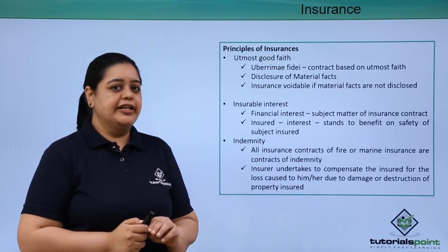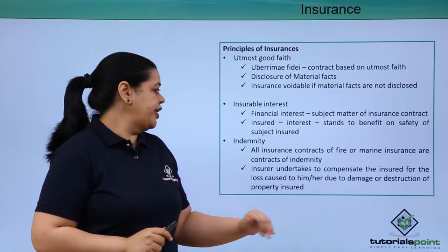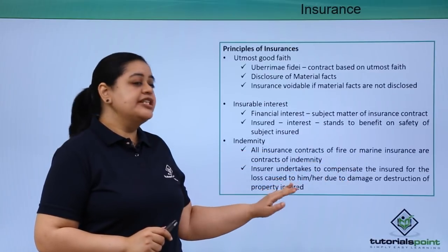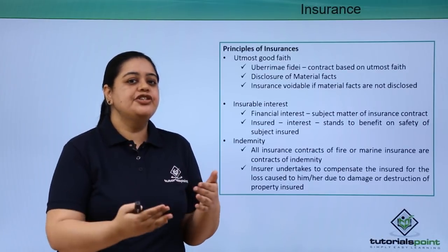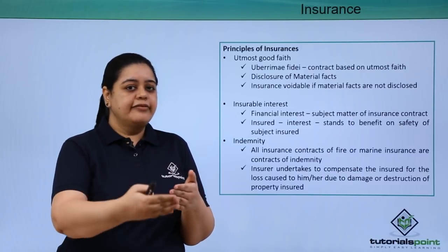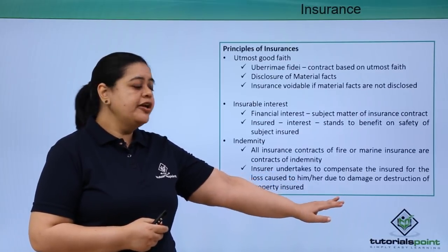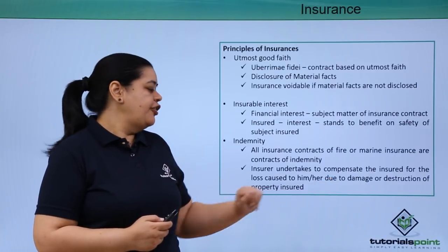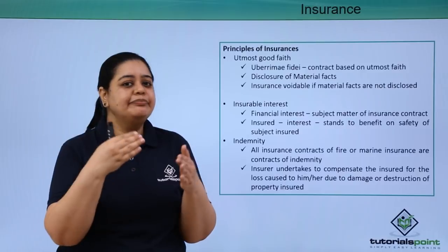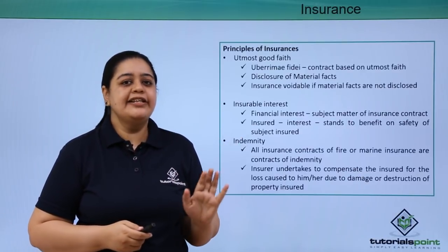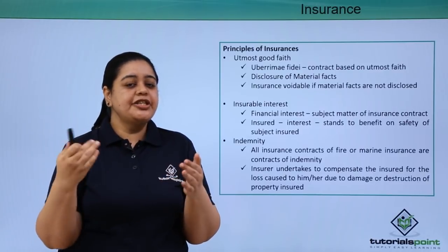The next principle is indemnity. Note that the principle of indemnity does not apply to life insurance — all other insurance contracts such as fire and marine insurance are contracts of indemnity. The moment a loss happens and the insurance company pays the sum assured, it brings you back to the position as if the loss never happened. For example, if my car had a value of three lakh rupees and gets completely destroyed due to a natural calamity, the insurance company will compensate the loss up to the sum assured, restoring me to the same position as if the loss never occurred.